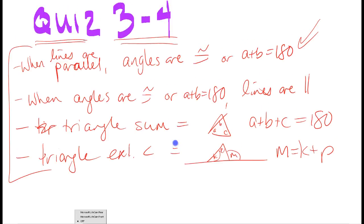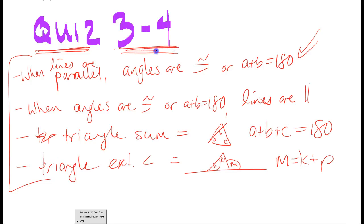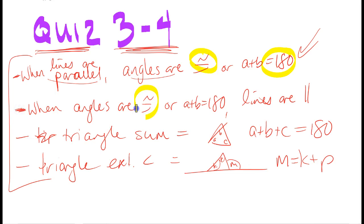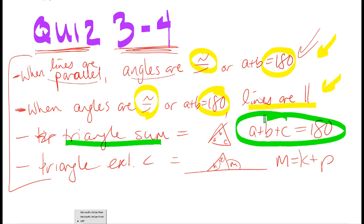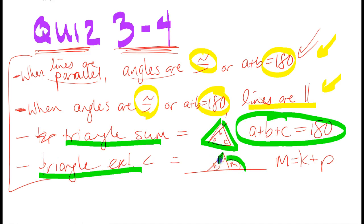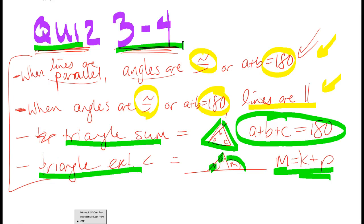The main topics on Quiz 3-4 are: knowing the difference between the original statements (when lines are parallel, angles are congruent or supplementary) and the converses (if angles are congruent or supplementary, then lines are parallel). You also need to know the triangle sum theorem (interior angles add up to 180) and the triangle exterior angle theorem (an exterior angle equals the sum of the two remote interior angles). Good luck!